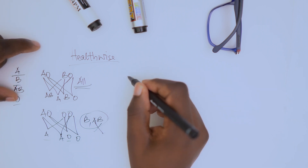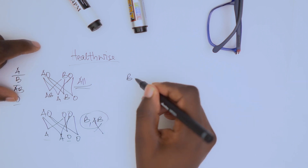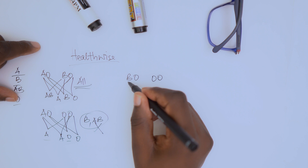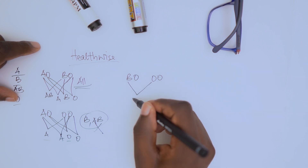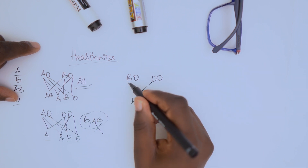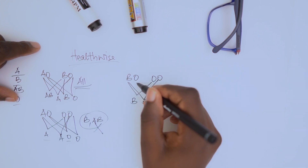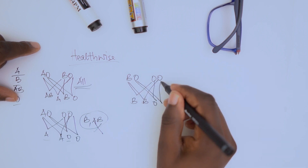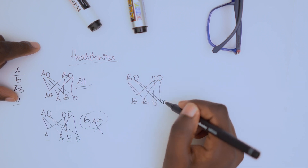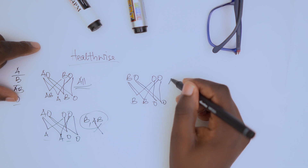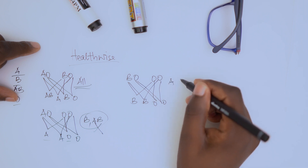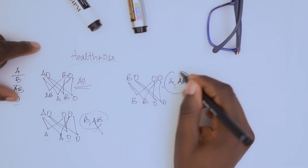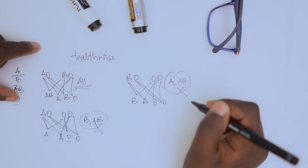Now let's go to B. If one partner is B and the other partner is O, what you're going to get is B and O. You cannot find A and you cannot find AB in that family — those cannot be found.